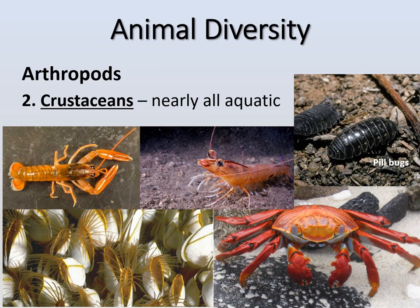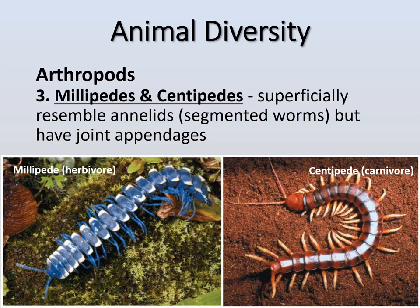Our next group of arthropods are crustaceans. Most of these are aquatic or at least somewhat aquatic. Crabs can go in and out of water. Pill bugs — sometimes called roly-polies — are crustaceans as well and are land animals, one of the few non-aquatic crustaceans. Shrimps, lobsters, and similar animals are all crustaceans.